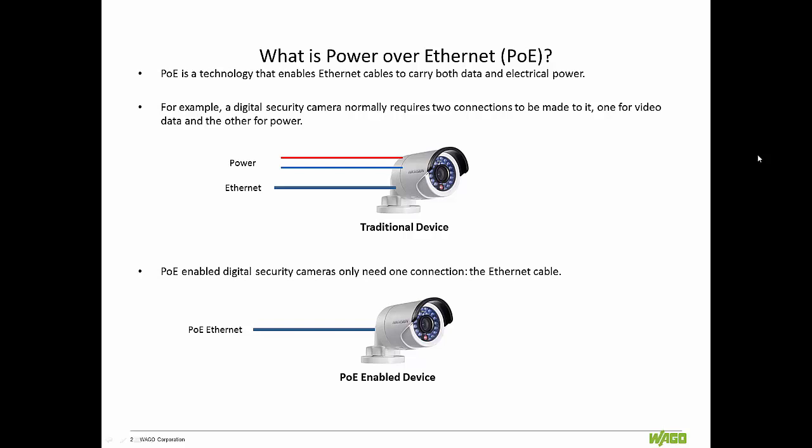In a PoE-enabled network, direct electrical current flows over the network cable together with normal Ethernet data traffic. PoE allows network devices to be installed in various locations where a power source may not be easily accessed. For example, a digital security camera normally requires two connections: a network connection to communicate with video recording and display equipment, and a power connection to deliver the electrical power the camera needs to operate. However, if the camera is PoE-enabled, only the network connection needs to be made, as it will receive its electrical power from this cable as well.